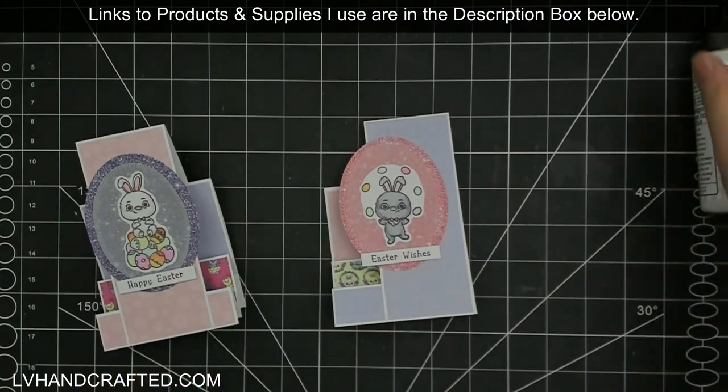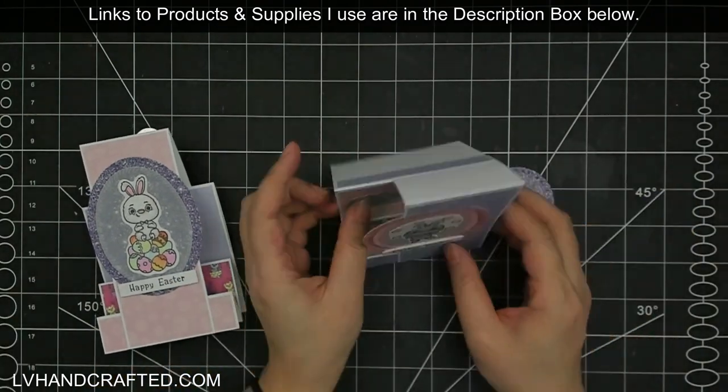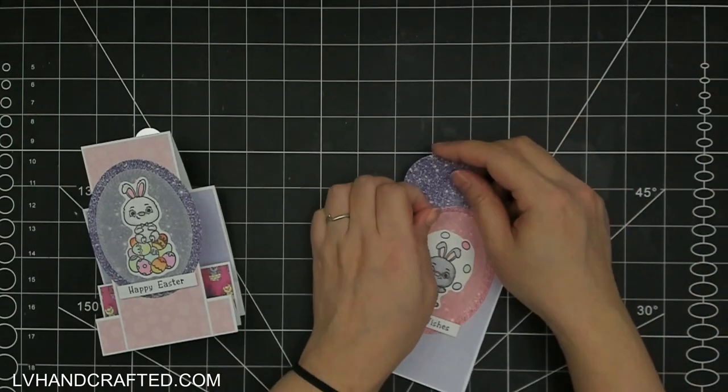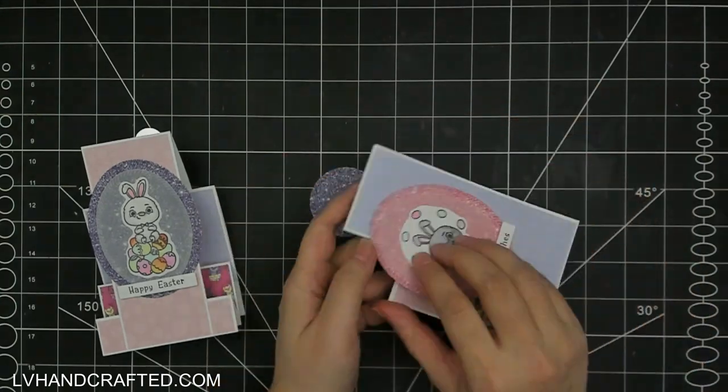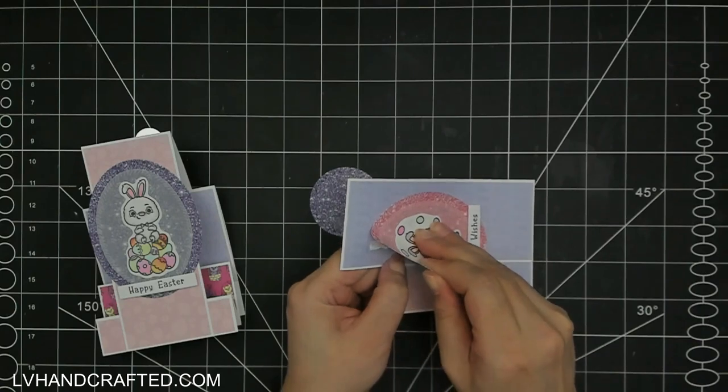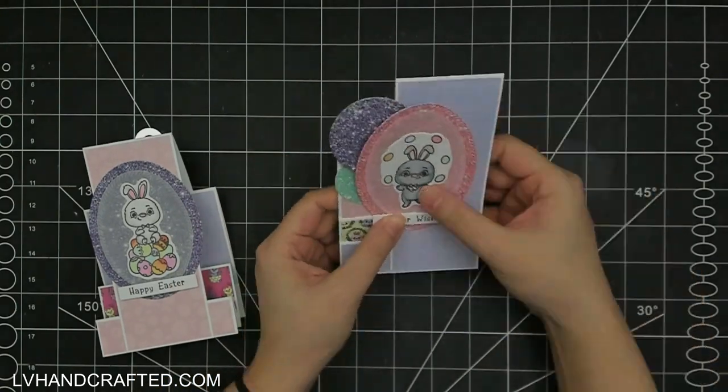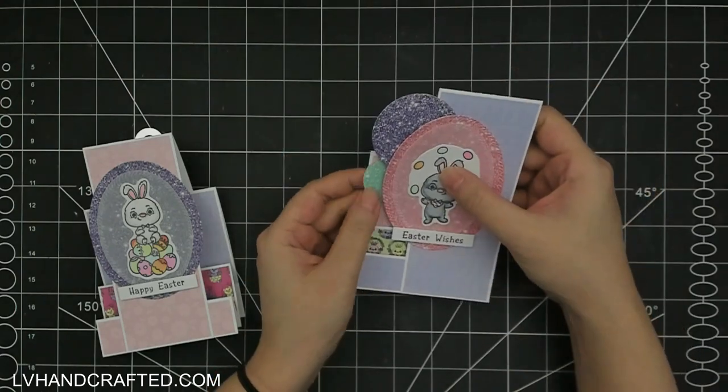And then I'll add a couple of sentiments to this, which are from the Quokka's Easter set. This one's from the Hoppy Days Easter set. And I thought what would be fun on this card, since we have the space on this side stepper.